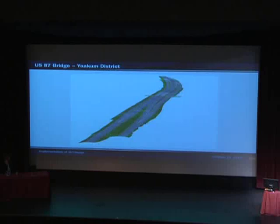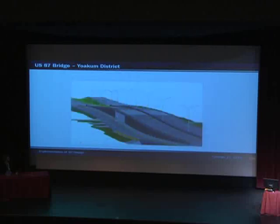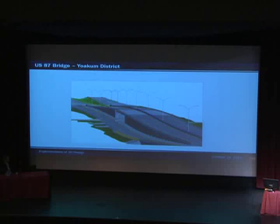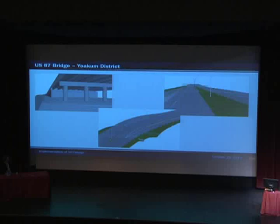We go on to the Yoakam District, and this is their pilot project — the US 87 bridge. It's an overpass project at FM 447 just outside the city of Victoria, and it includes a transition from a four-lane divided highway to a five-lane highway. Here's the aerial view of the overpass. The metal beam guard fence you see here can be created using the 3D line styles, as well as the F-shaped barrier, which you can do using the templates — as Eddie was showing earlier. You just draw it into your template and the program pushes it out in the background.